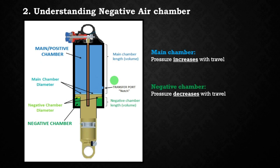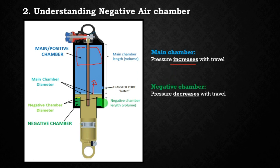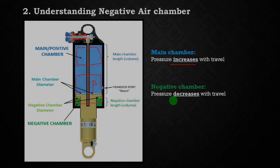To understand the dynamics of pressures in both chambers: when the shock compresses, the volume of the main chamber becomes smaller and therefore the pressure increases. The opposite happens in the negative chamber — when the shock compresses, the negative chamber becomes bigger and therefore the pressure drops along the travel.